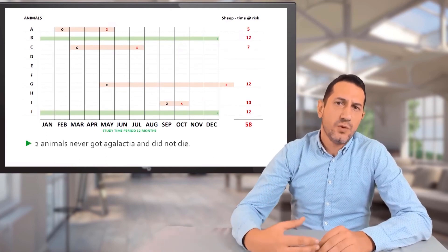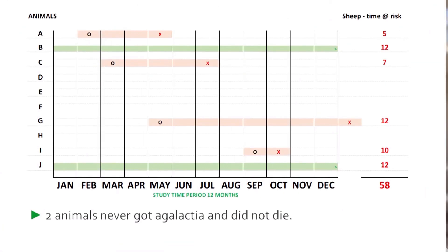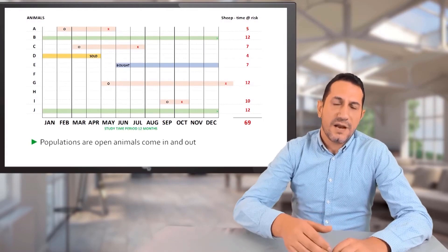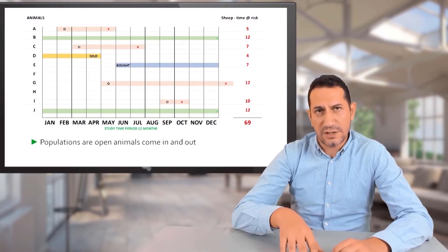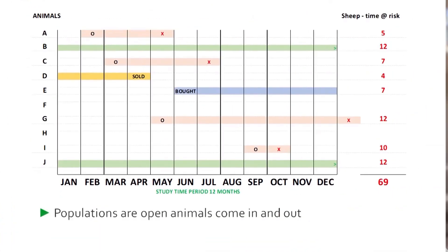Two more animals never got the disease, so they were followed through the whole study and each contributes 12 months, since they never died from the disease. This illustrates an open population, where animals migrate in and out, or die from other causes — animals go in and out of the flock, which is normal life.